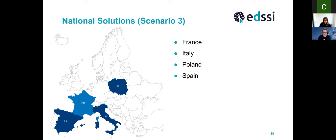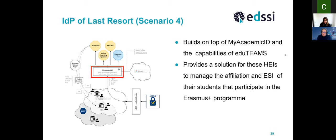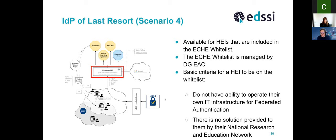The IDP of Last Resort is built on top of My Academic ID and provides a solution for those institutions to manage the affiliation and group of certified students participating in the Erasmus Plus program. It is available to institutions included in the Erasmus Charter Holder whitelist. It is managed by DGAC, and there are two basic criteria: one, the institution does not have the ability to operate their own infrastructure for federated education; and two, there is no other solution provided to them by the national research and education network.